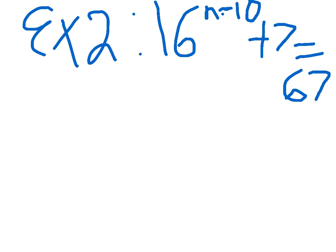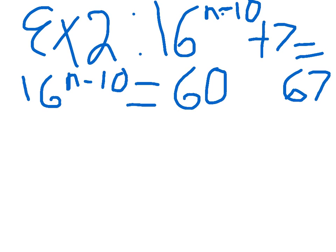So our first step, we're going to subtract the 7 so that we could get our base alone. And we're going to have 16 to the N minus 10 is equal to, so we subtract the 7 and we get 60 on this side.